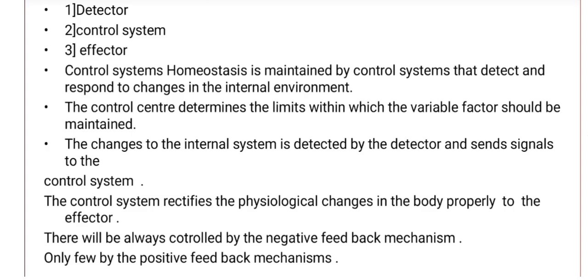The detector detects a change — for example, low temperature — and sends that information to the control system. The control system identifies what happened and determines what action should be taken, such as increasing the temperature. This is done with the help of the effector.